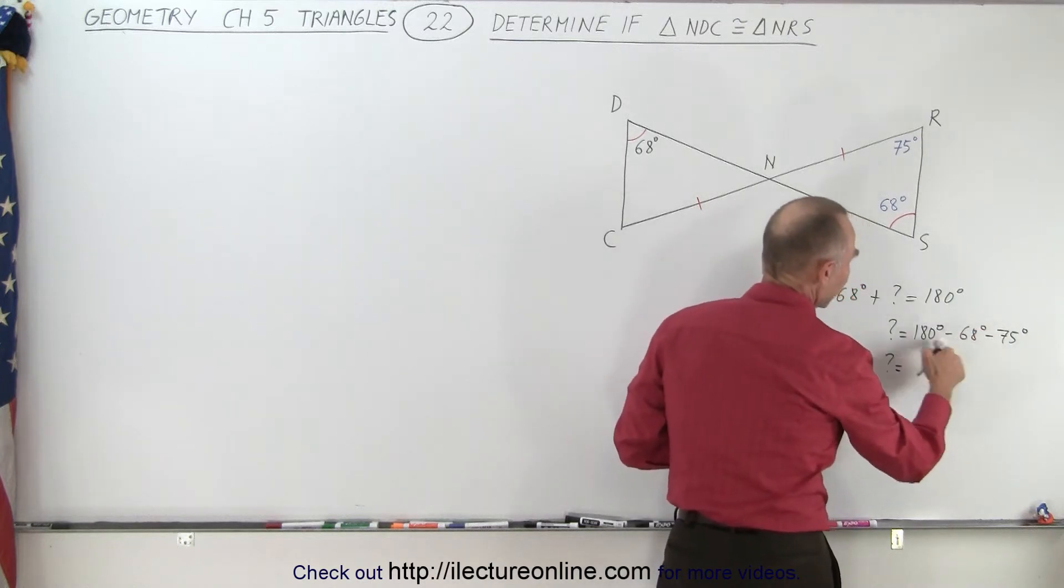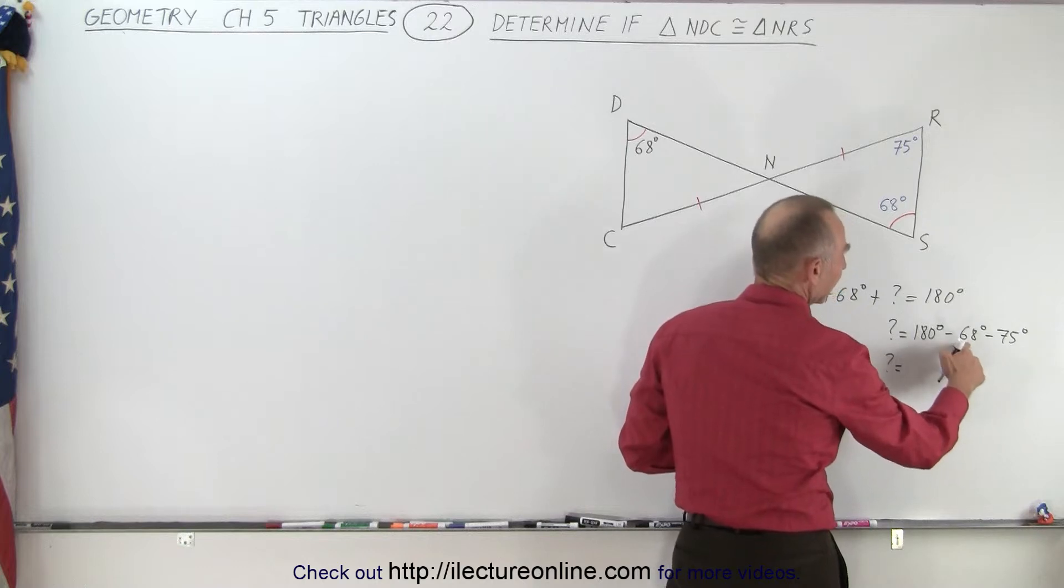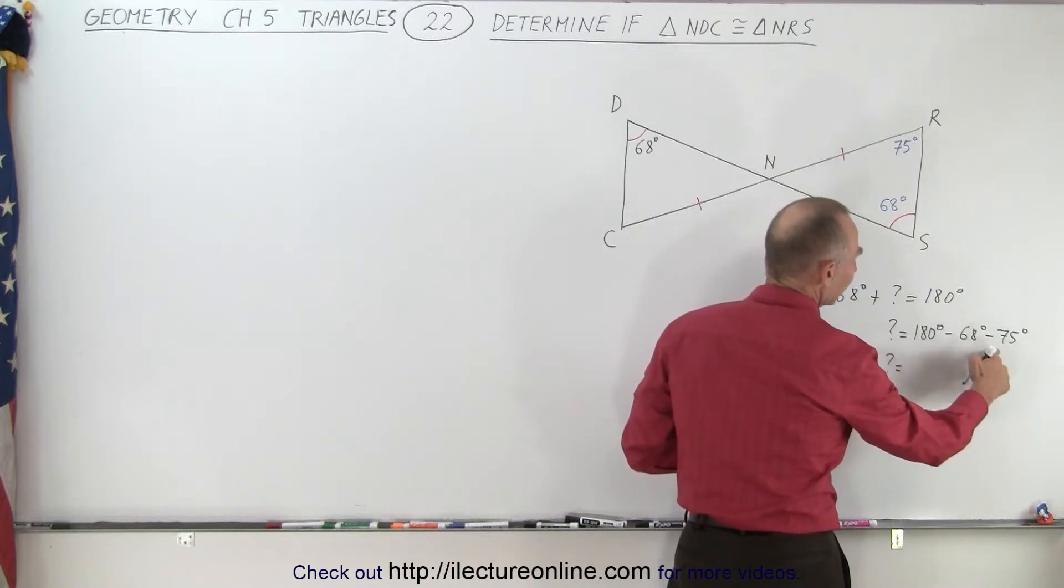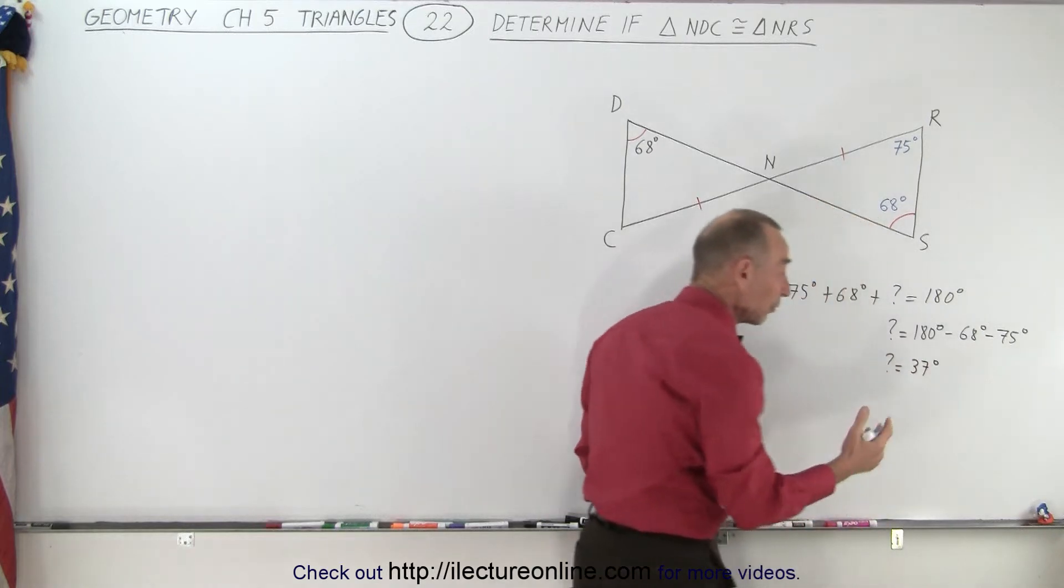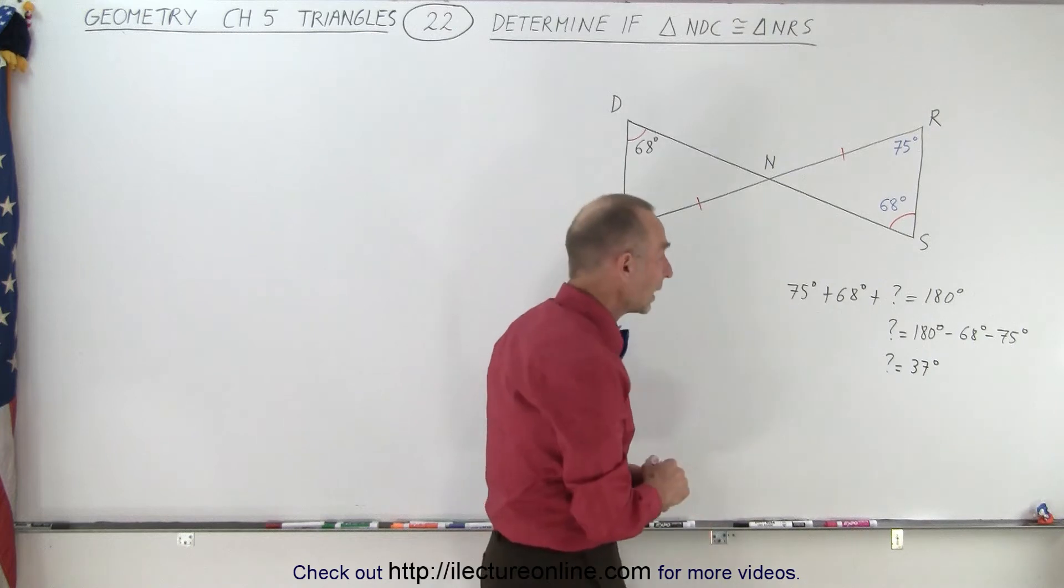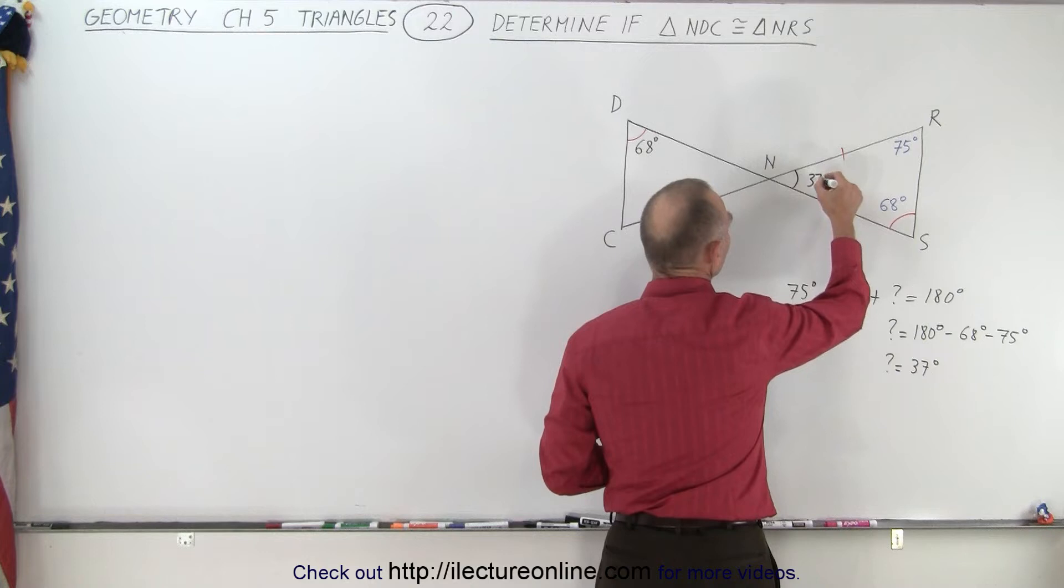And so therefore, the unknown angle is, let's see here, we subtract 68 from that, we get 112. It's probably easier to add these two up. So that's 7 plus 8, that's 130. Well, that's 143. That leaves us with 37 degrees because 143 plus 37 is 180. So that means that this angle must be 37 degrees.